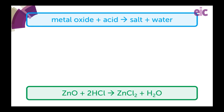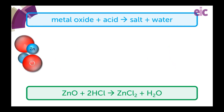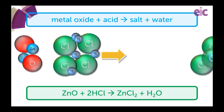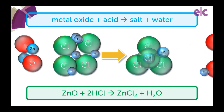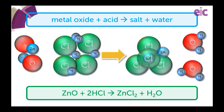When acids react with metal oxides, they form a metal compound known as a salt and water. You could think about it as the zinc and the hydrogen swapping places, or the oxygen and the chlorine swapping places.